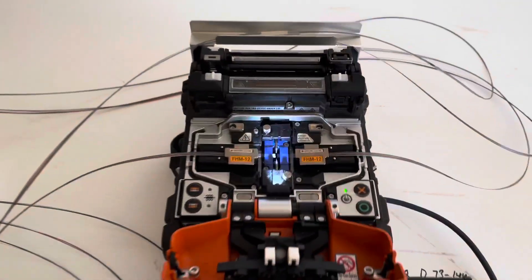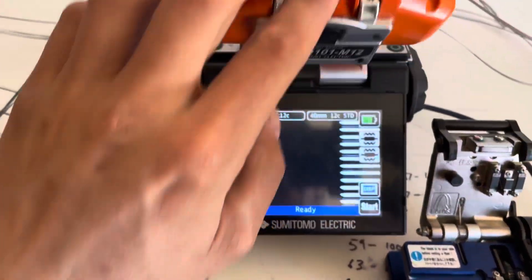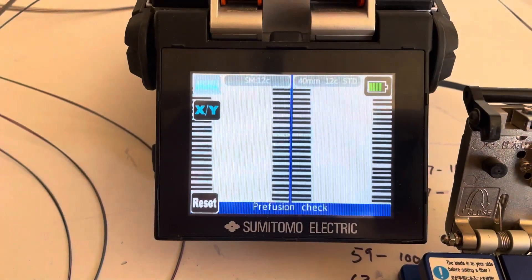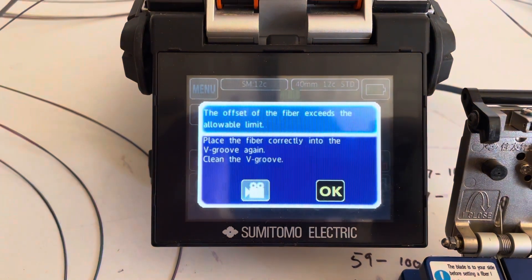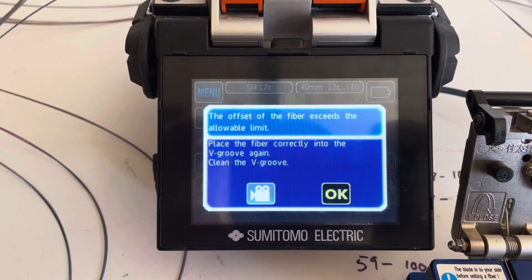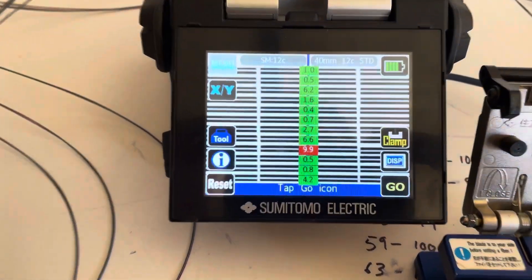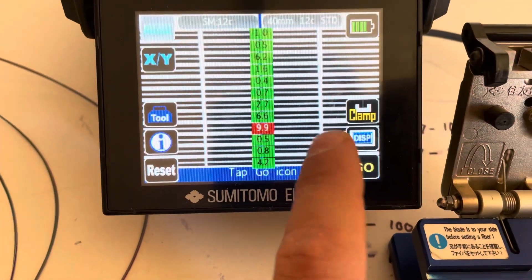As you can see, we have the fibers into the machine all lined up. Go ahead and close the lid. Now what you're looking for is for those fibers to line up correctly. The machine has noticed that the offset of the fibers, the alignment is not right. If you go ahead and check your machine, it'll tell you which fiber. As you can see, there's a bit of crookedness with this guy.